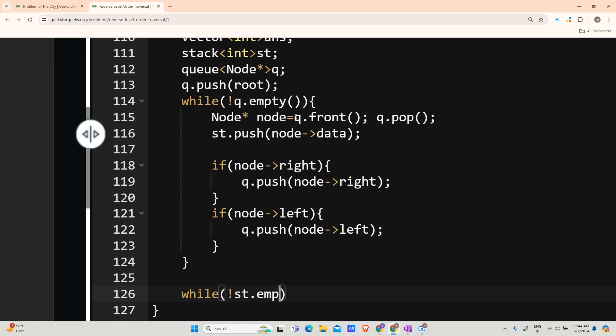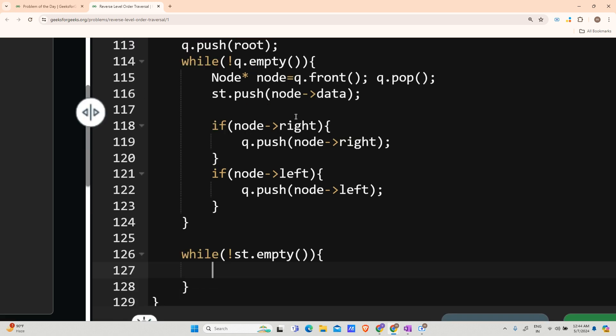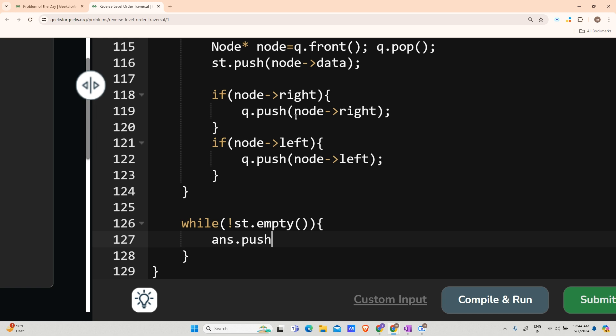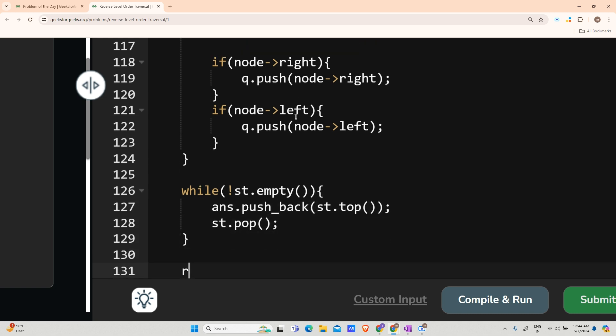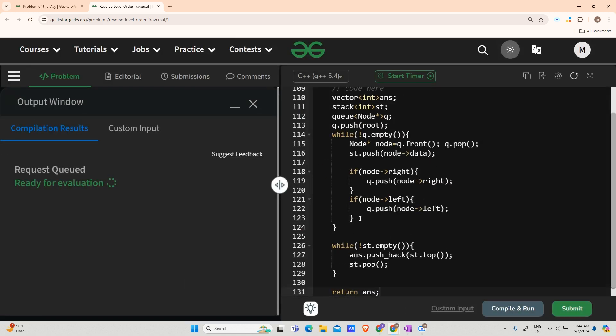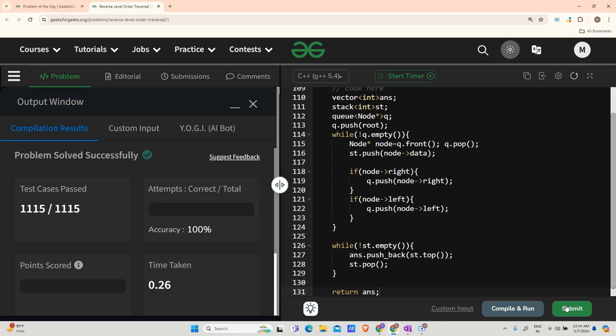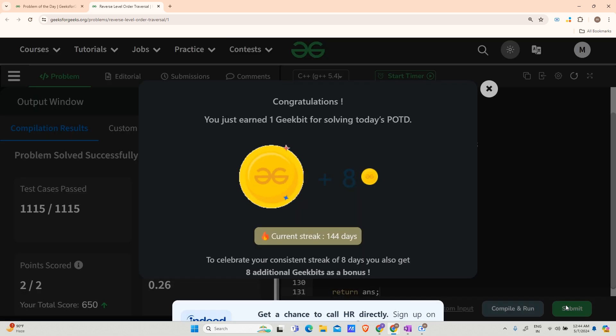Now after getting all the values in the stack I will just say while stack is not empty, I will just push answer dot push back the top value of the stack and then pop that element out of the stack. Now return your answer. This should work fine, let us try to compile and run it. It is running fine for the test case, let's try it for the backend test cases as well. In the meantime please do consider subscribing to my channel and do follow me. So we have got accepted. Thank you for watching, we'll meet tomorrow with a new question, have a nice day.